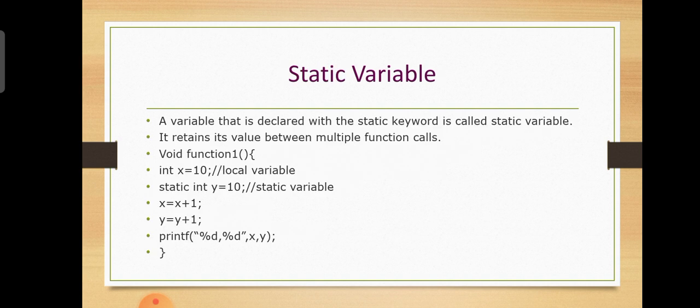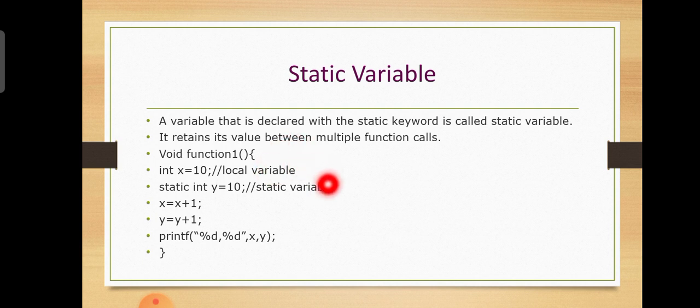The next type is the Static variable. A variable that is declared with the static keyword is called a static variable. It retains its value between multiple function calls. In the example, x equals 10 as a local variable, and static y equals 10 as the static variable. This shows the difference between them.